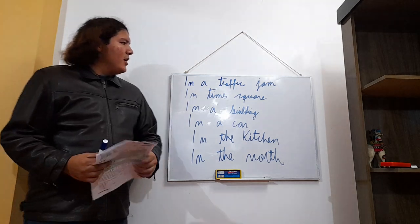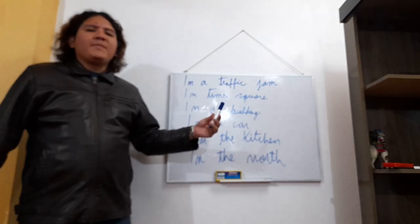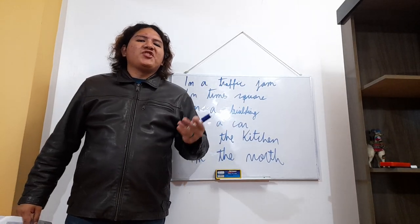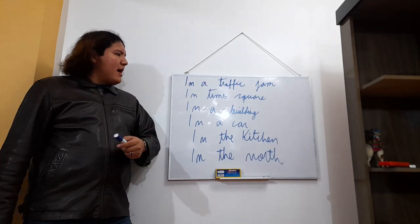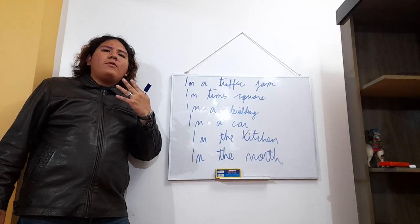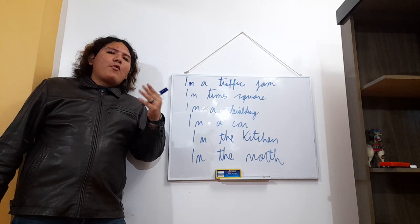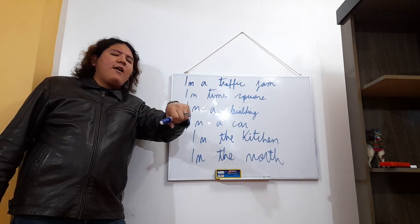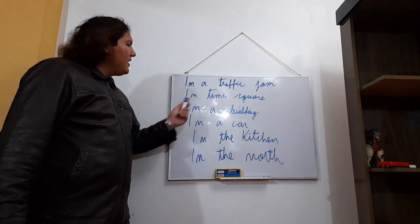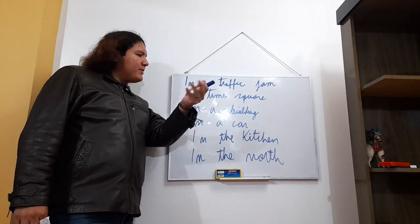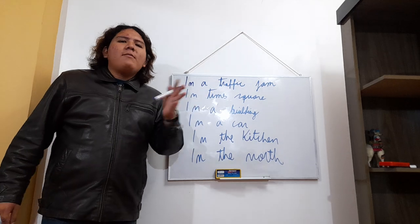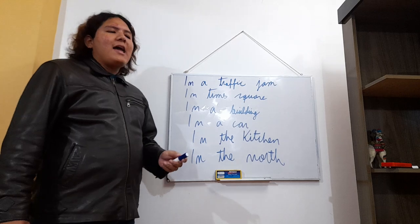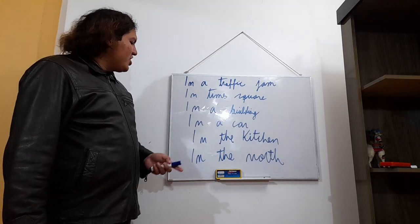More examples with 'in': 'I am in a traffic jam' — very common in Peru. 'I am in Times Square.' 'I am in a building.' 'I am in a car' — because you are inside the car. 'I am in the kitchen.' You use 'in' when you are enclosed within or inside a place.